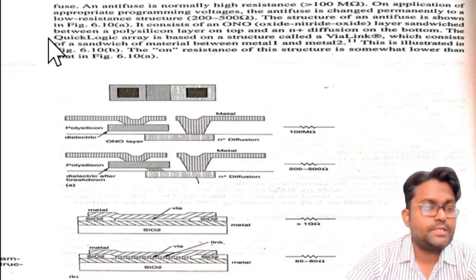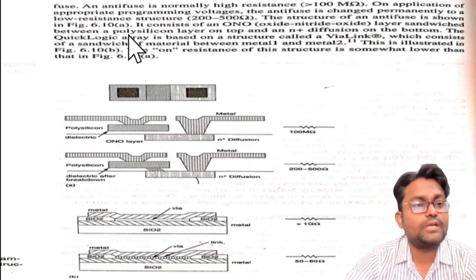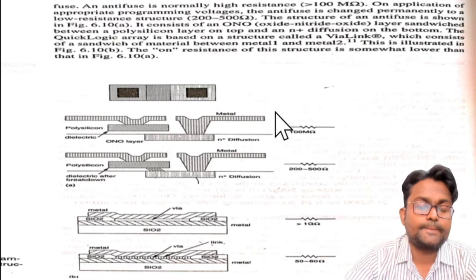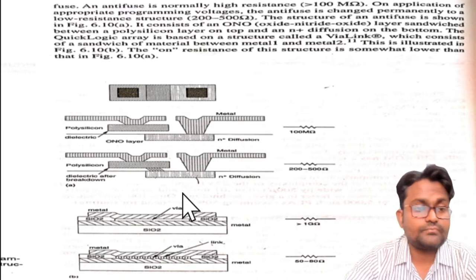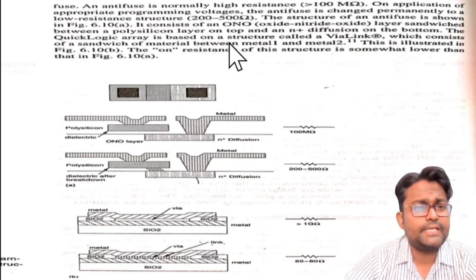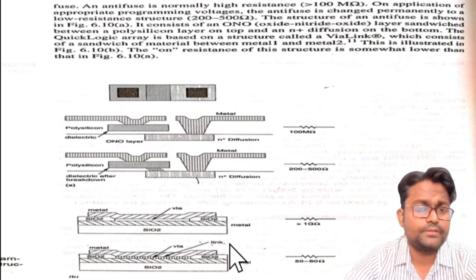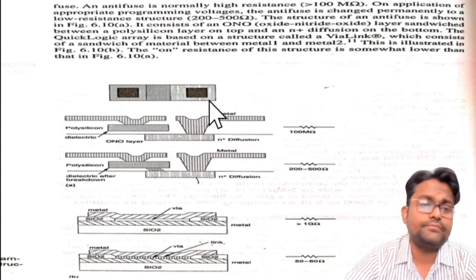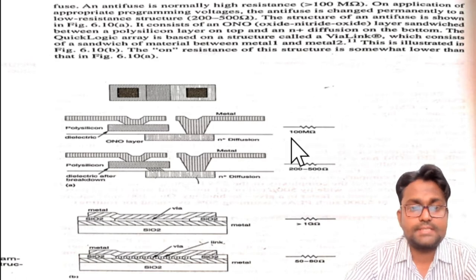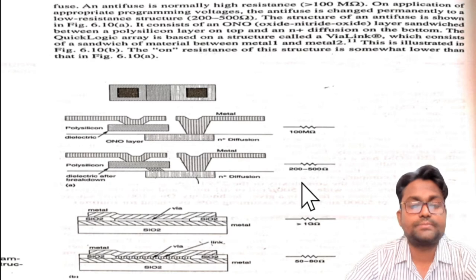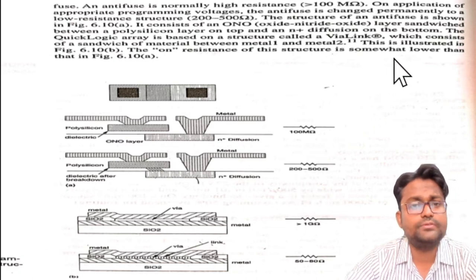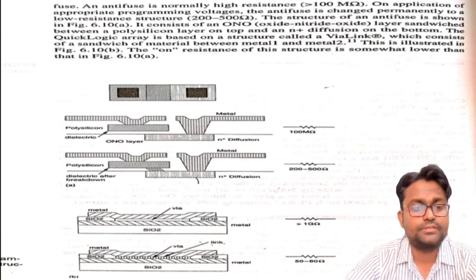This anti-fuse structure is used by Actel. However, QuickLogic — another company implementing FPGA — uses a different element known as ViaLink. The structure of ViaLink consists of a sandwich of material between Metal 1 and Metal 2, as illustrated in the diagram. When laser rays are applied, the resistance lowers from 100 mega ohms down to around 200 to 500 ohms, similar to Actel's PLICE element.